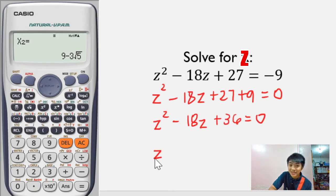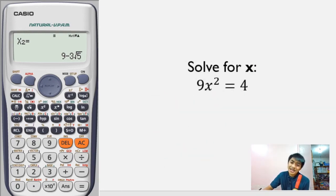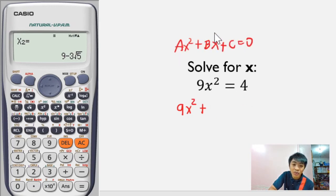May lalabas na apat na equation diyan. Piliin mo yung nagmumukhang quadratic equation, and obviously that's number 3. After pressing 3, may lalabas na ganyan, na ABC and then 0, 0, 0. Anong ilalagay diyan? You are going to input the numerical coefficients of the terms of the quadratic equation.